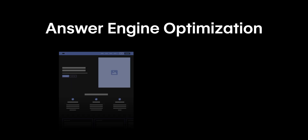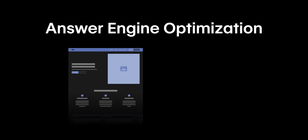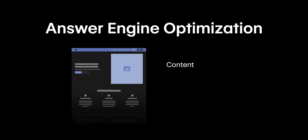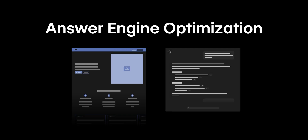And that is where AEO comes in. AEO, or Answer Engine Optimization, is about appearing in AI search results by optimizing your content, tech, and earned presence so that your content is easily discoverable and understandable by the LLMs that power AI search.